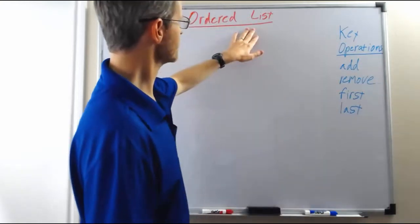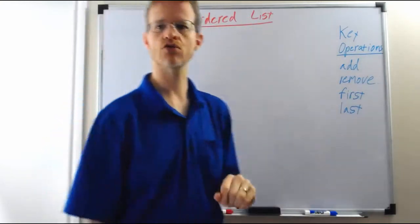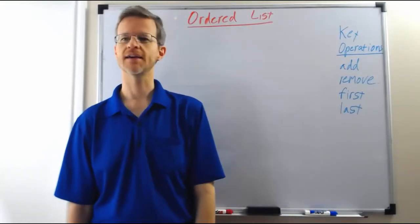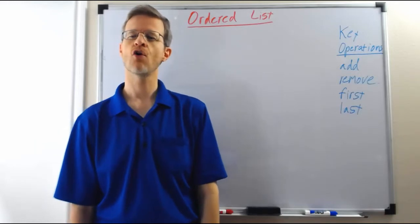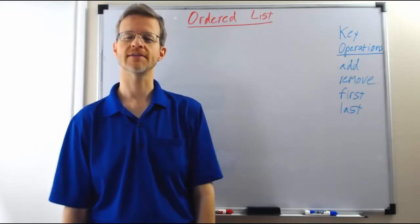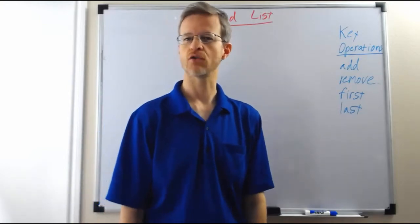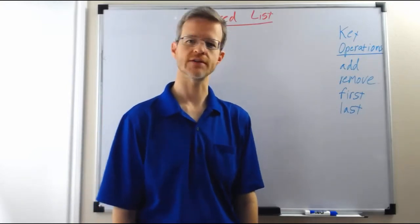So for ordered lists, the key property is that they always keep all of the items or elements in the list in some sort of order according to comparing the different elements. For example, alphabetical order is what this ordered list we're going to look at is going to do.